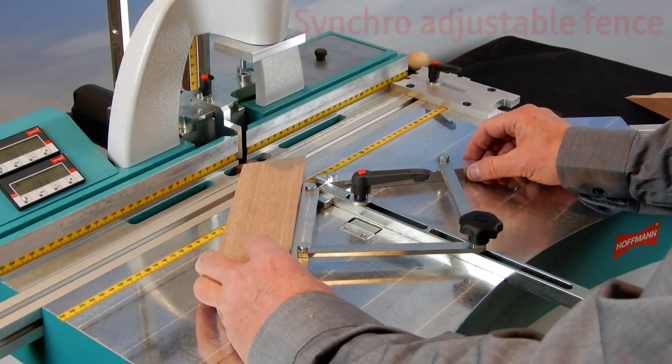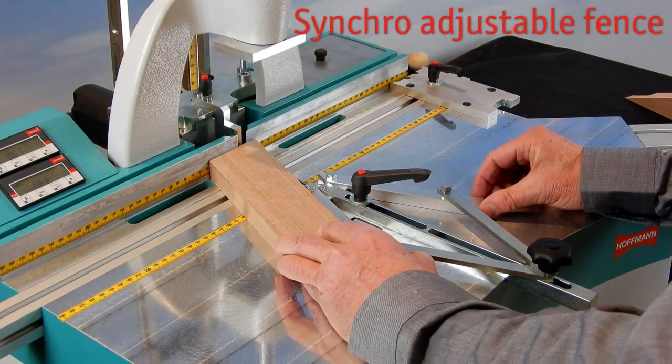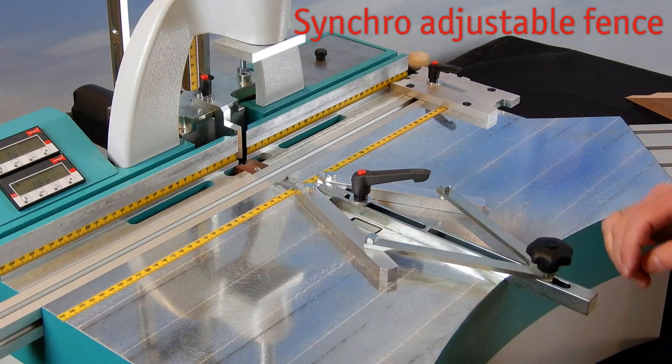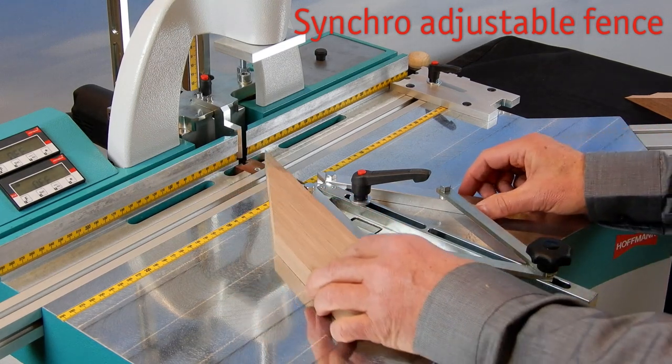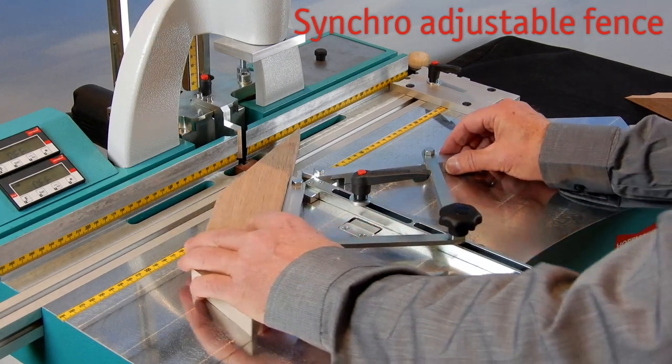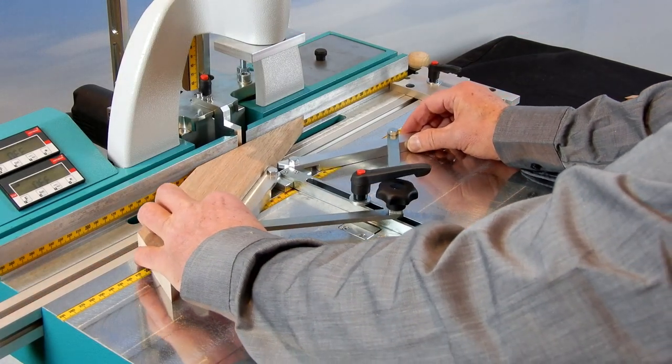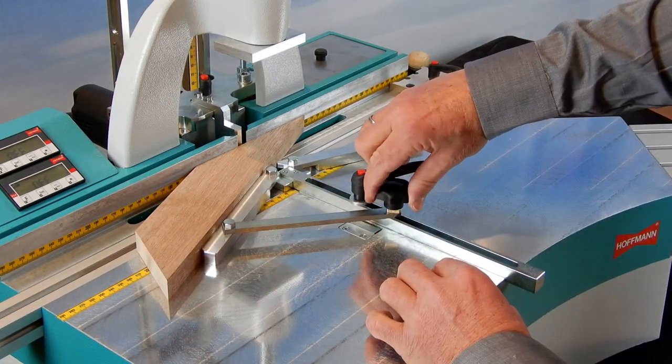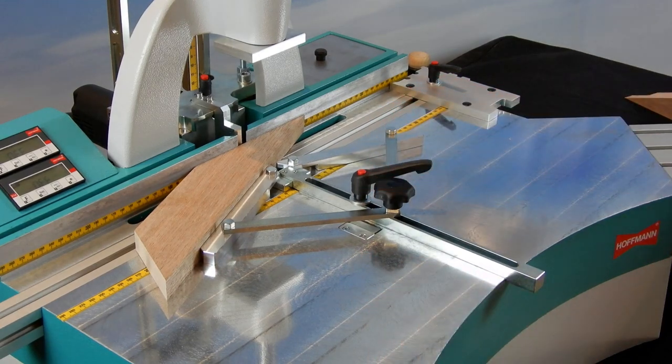Angles from 0 to 90 degrees are infinitely adjustable. The angles are set by using the workpiece lined up with the wing of the synchro fence. By moving the fence, we reach a perfect alignment with the rear fence line of the machine.